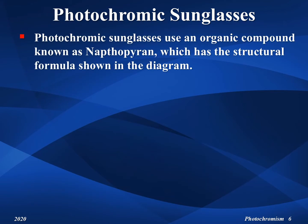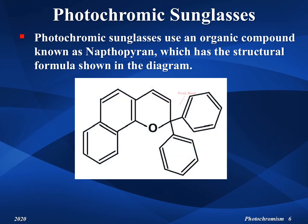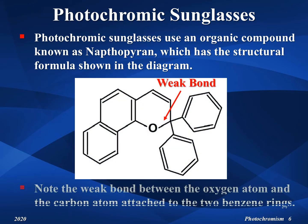Photochromic sunglasses are made using an organic compound known as naphthopyran, which has the structural formula shown in the diagram. The red arrow shows that there is a weak bond between the oxygen atom and the carbon atom attached to the two benzene rings.